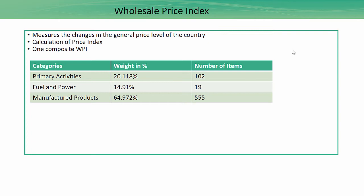There is only one composite WPI for the whole country — you can search online to find the current WPI. This index is computed on a weekly basis, and we get the press release or notification through government bodies about it.